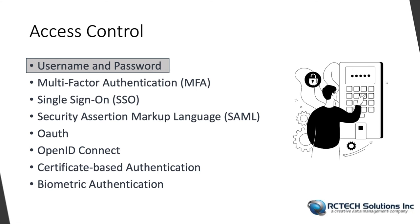In cloud computing, various authentication mechanisms are used to verify and identify users and to ensure that only authorized individuals or systems can access cloud resources. Number one: username and password. This is the most widely used authentication method. Users provide a unique username and the corresponding password to access their cloud accounts. However, it is important to use a very strong password and enforce password policies to prevent unauthorized access.